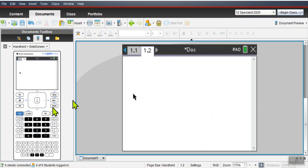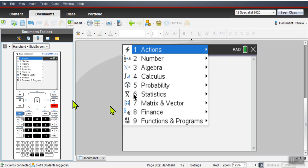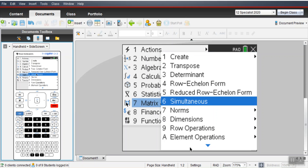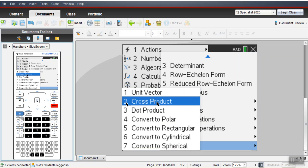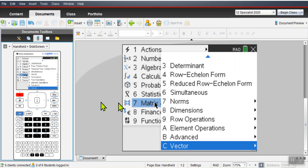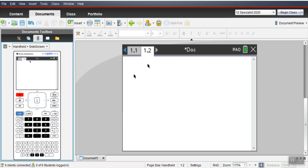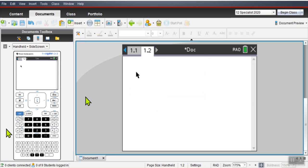You can go menu. This is the long way. You can go menu, matrix, vector, vector, cross product. Or you can just memorize the shortcut. Any guesses what the shortcut is? There it is. Cross P.